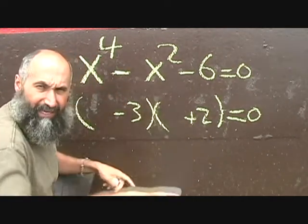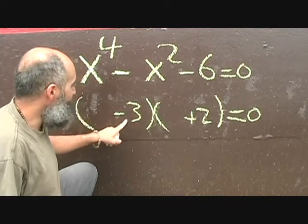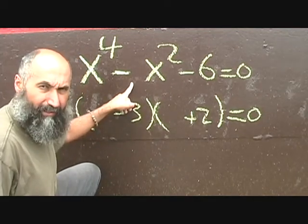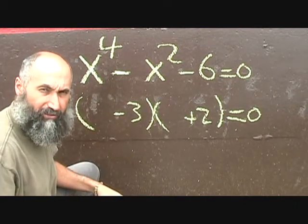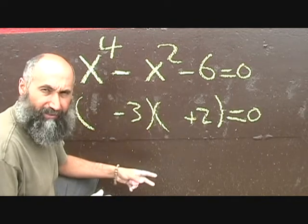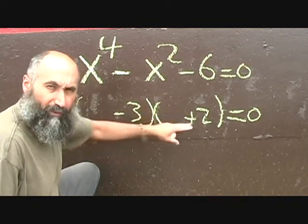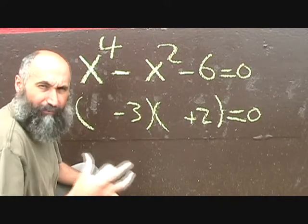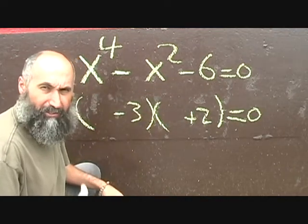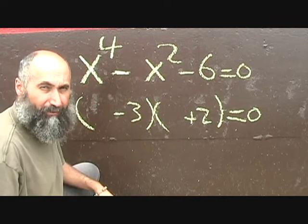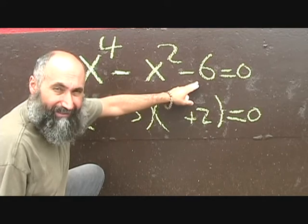If you do the factor table, those are the only combinations that multiply to give you negative 6. The better you know your multiplication table, the easier this will be. Initially it's a little hard to figure out the two numbers. Later we'll do problems with more complicated numbers, but in general the numbers you'll get are going to be a bit more complicated than just 6 and 1.